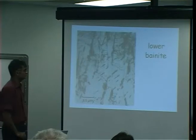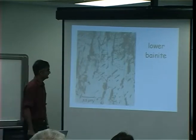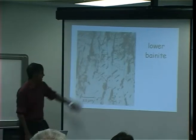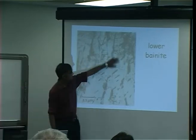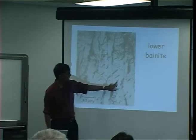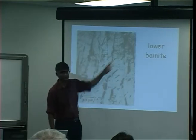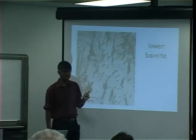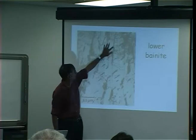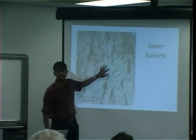Lower bainite, by contrast — again a transmission electron micrograph — shows the same scale of plates, but you also have cementite particles inside the plate and at the boundaries.